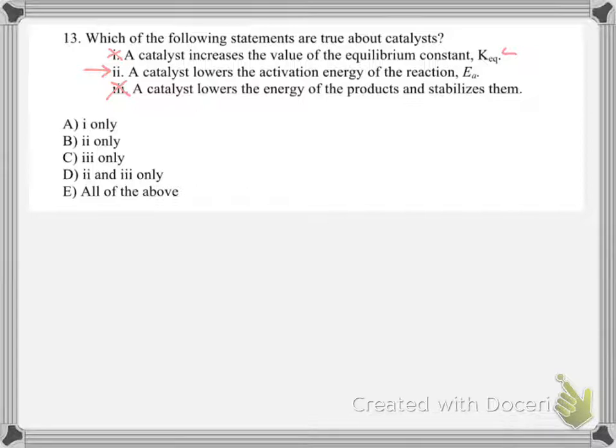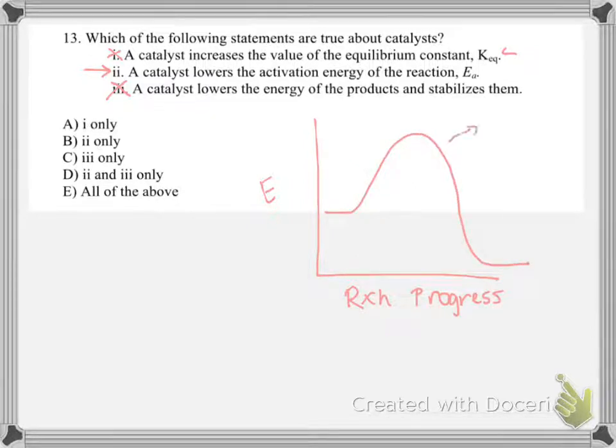What catalysts do is lower the activation energy by changing the mechanism, thus speeding up a reaction. And so we could see this on a reaction coordinate diagram where we have reaction progress into energy. And we could have our normal reaction. So this would be uncatalyzed. And then the catalyzed reaction, we'd start with the same energy. And then we would just have some different mechanism lowering the activation energies. And we would end at the same energy. So we'd have a constant delta E. In this case it's negative. So the answer here is just B.